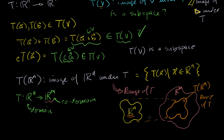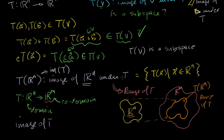This subset has a special name: it's called the image of T, sometimes written as Im(T). This might be a little confusing — before, when dealing with subsets, we called it the image of our subset under T. But when you take the entire n-dimensional space and find that image, we call that the image of the actual transformation itself.